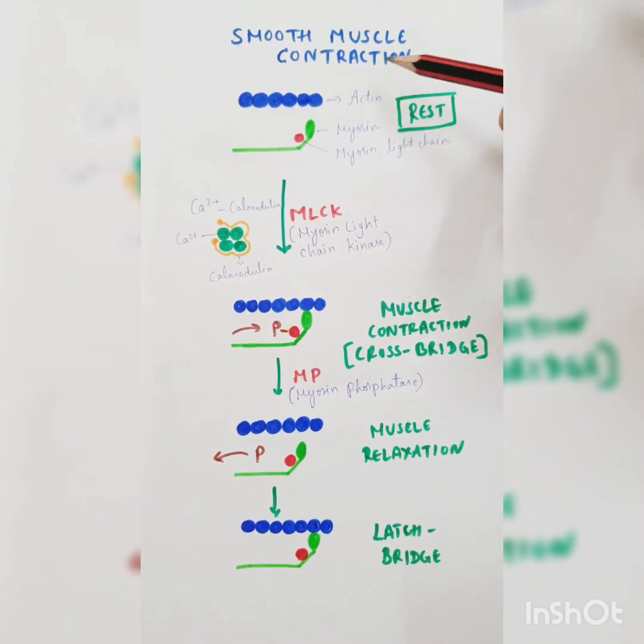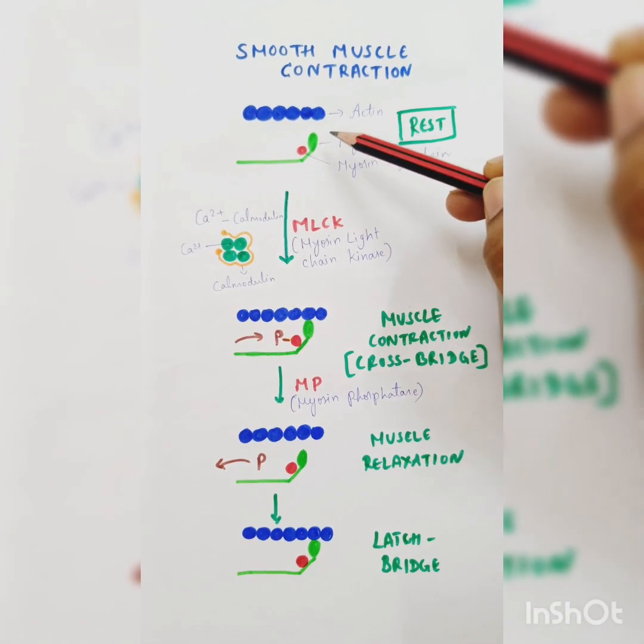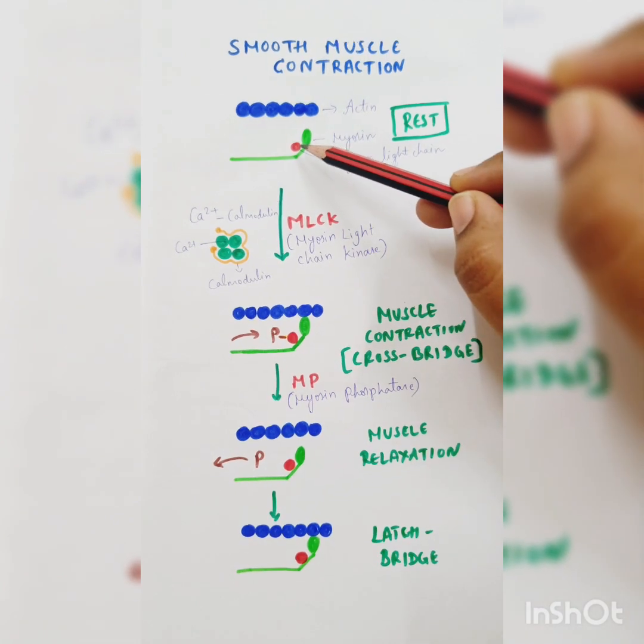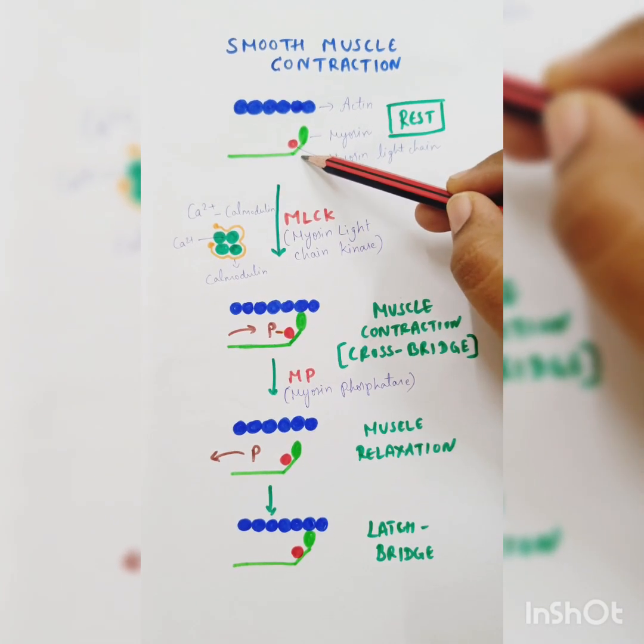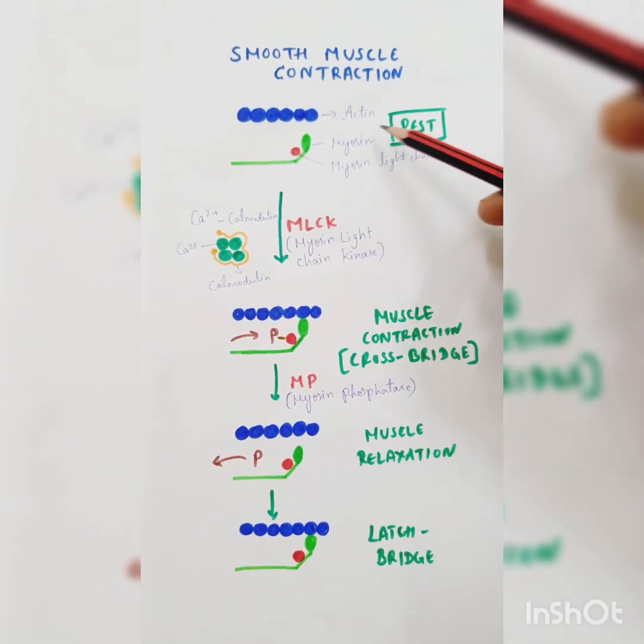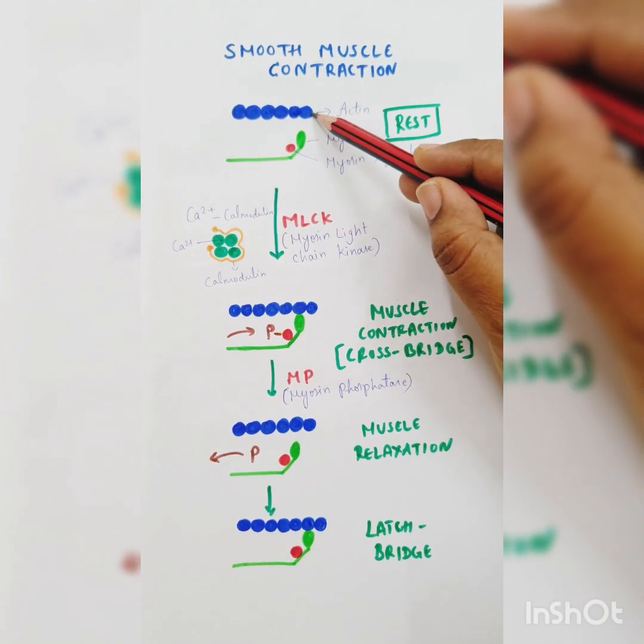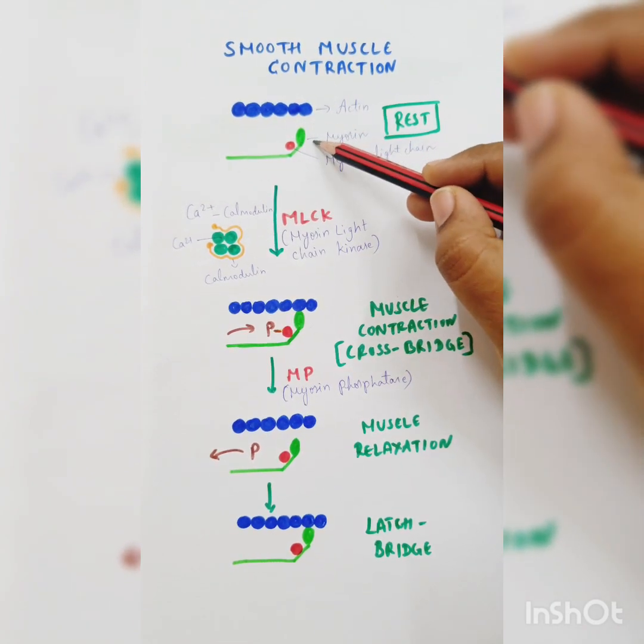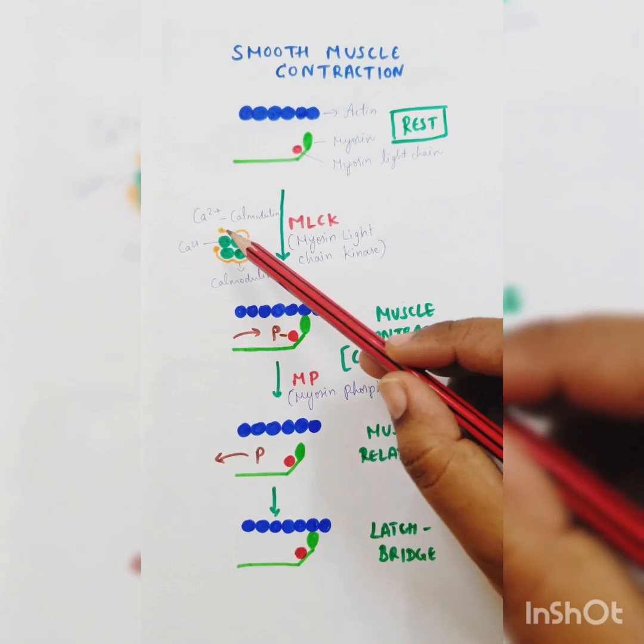Muscle contraction is explained in this video. You can see these are the actin molecules, this is a myosin molecule. This red one here is a myosin light chain. At rest, myosin is not attached with the actin molecule, so there is no muscle contraction going on.